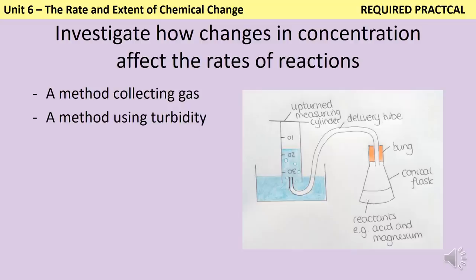The first required practical investigates how rate changes with concentration, and has two parts. The first uses a reaction that releases gas — typically magnesium or marble chips with acid. You measure the volume of gas produced at regular time intervals (every 5 or 10 seconds) using either an upturned measuring cylinder full of water or a gas syringe. Taking readings at regular intervals is vital so you can calculate the rate.